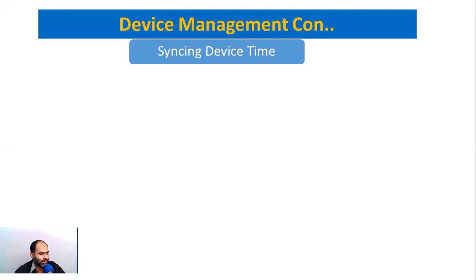Somehow if the device goes down, its time gets reset. When it displays on screen, it may show an out-of-order or default time. When employees enroll their attendance check-in or check-out on that default time, the attendance log will be recorded on a default date. When you try to upload the attendance data from the biometric machine into the software, there will be no data in your software.